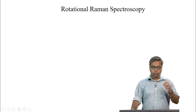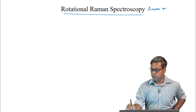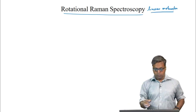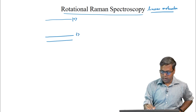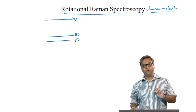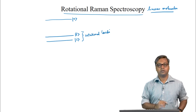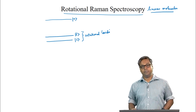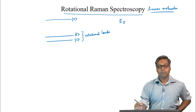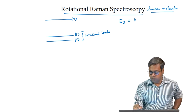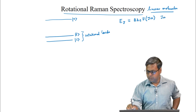In rotational Raman spectroscopy, we will first focus on linear molecules. Let us draw again the Raman process — we have the virtual state and the two other states, where I and F are the rotational levels. As we know, for the rigid rotor model, the energy of a molecule is given by E_J, where J is the rotational quantum number: E_J equals BhcJ(J+1), and the energy unit here is in joules.